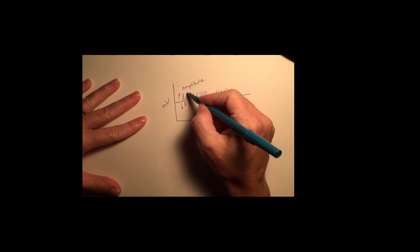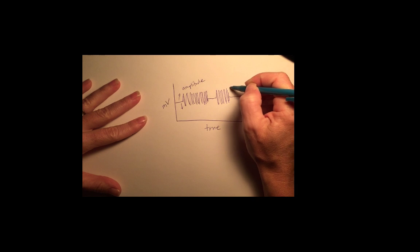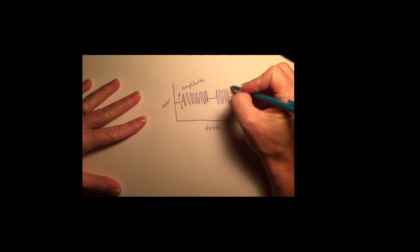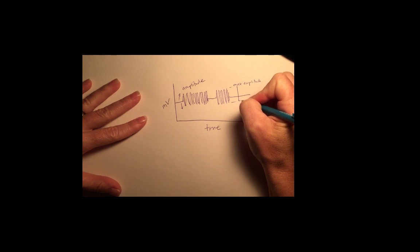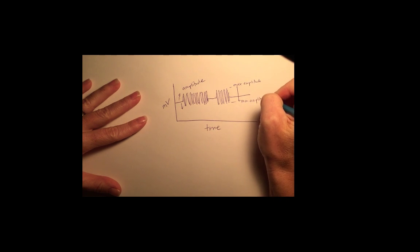Any graph you have that has varying amplitude like this, you can measure the peak-to-peak value. And the peak-to-peak value is going to be the maximum amplitude to the minimum amplitude value.